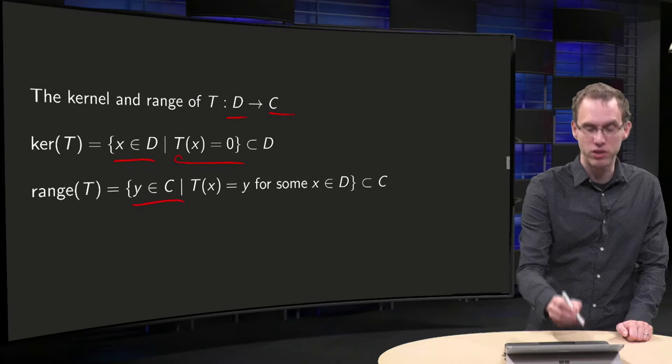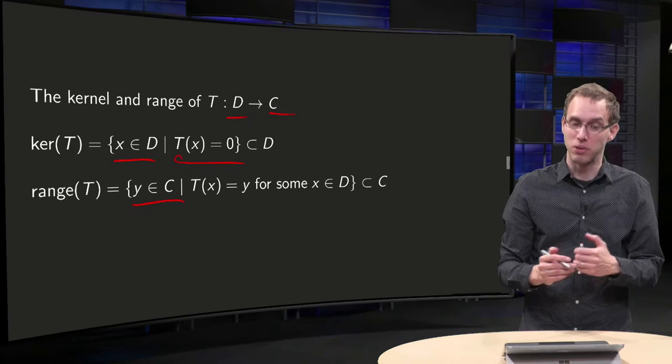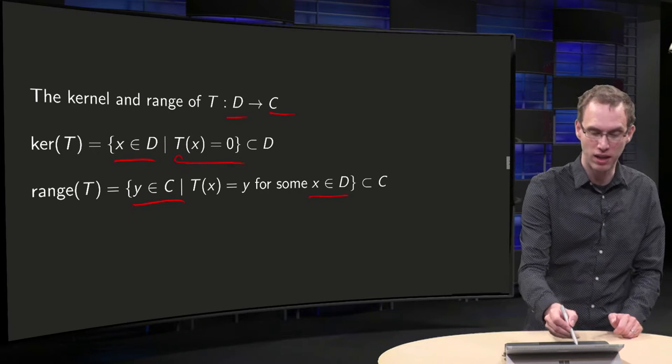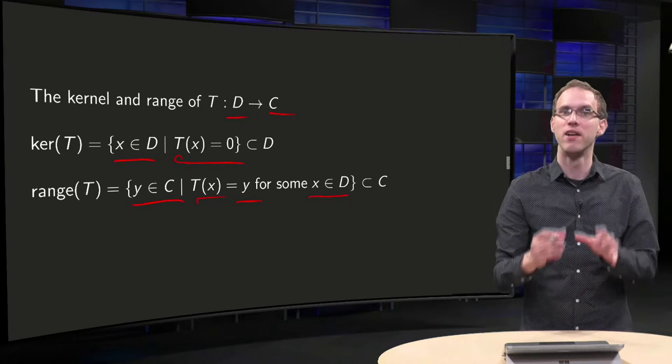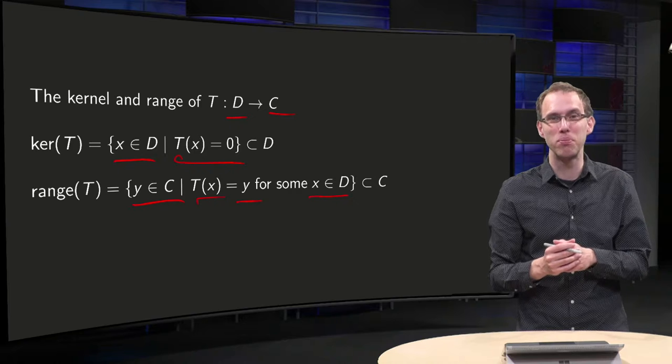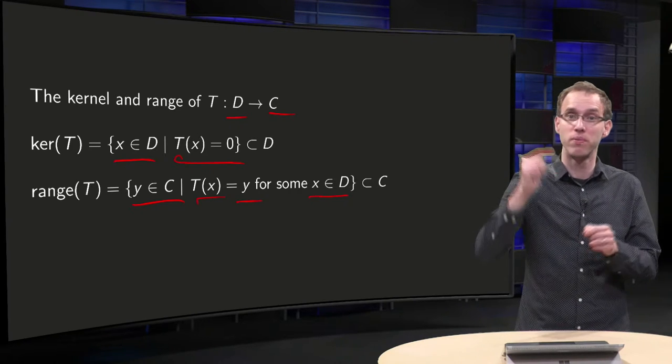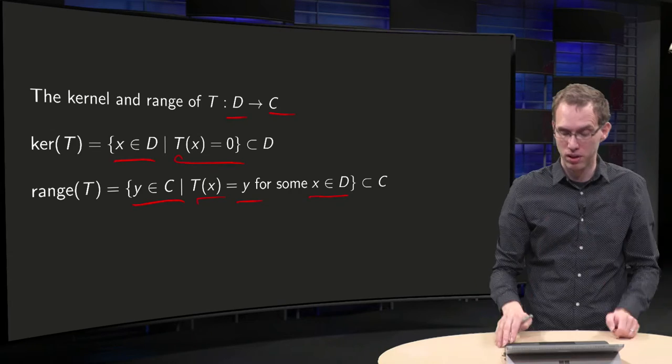The official notation: the points y in the codomain that you can reach, so the points such that there is some x in the domain such that the image equals y. The formula looks kind of complicated, but the idea is actually not that hard, just the points where you can come in the codomain.